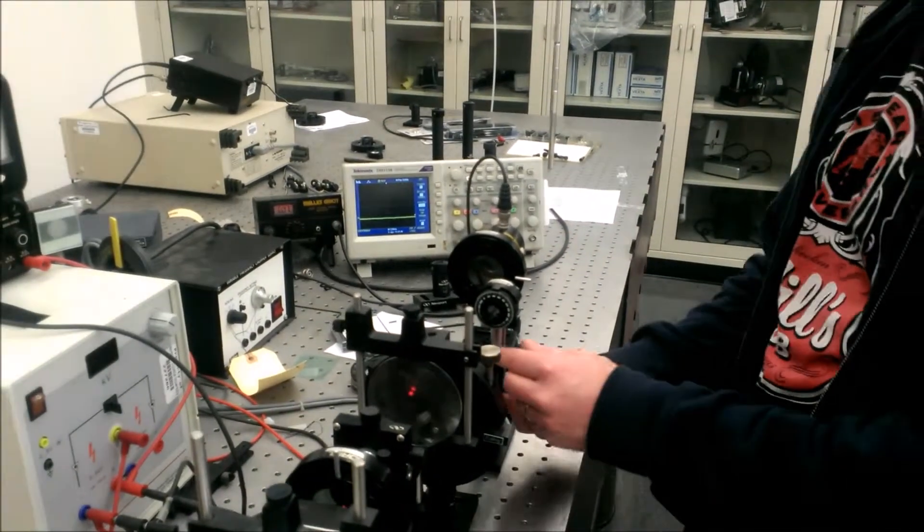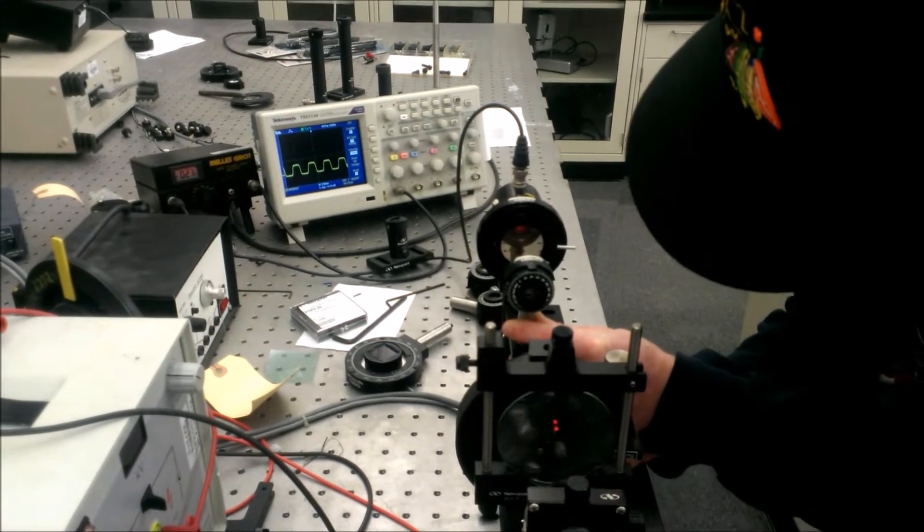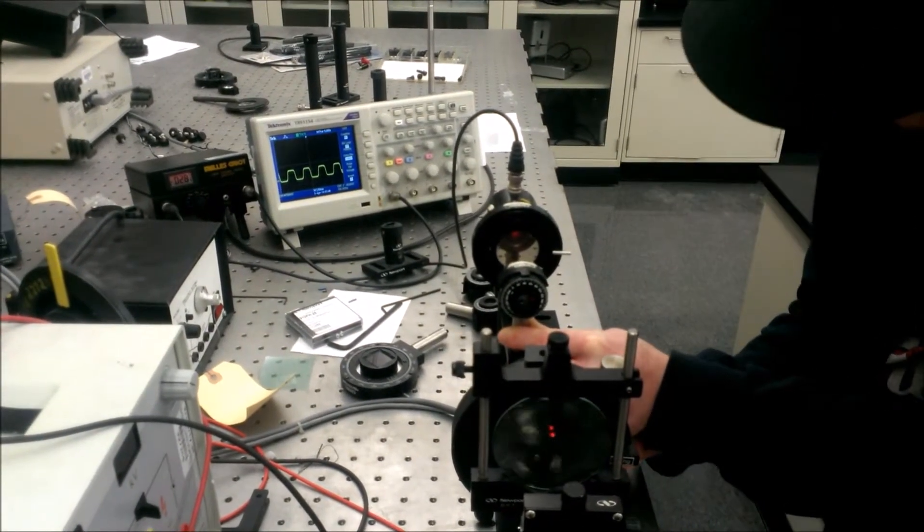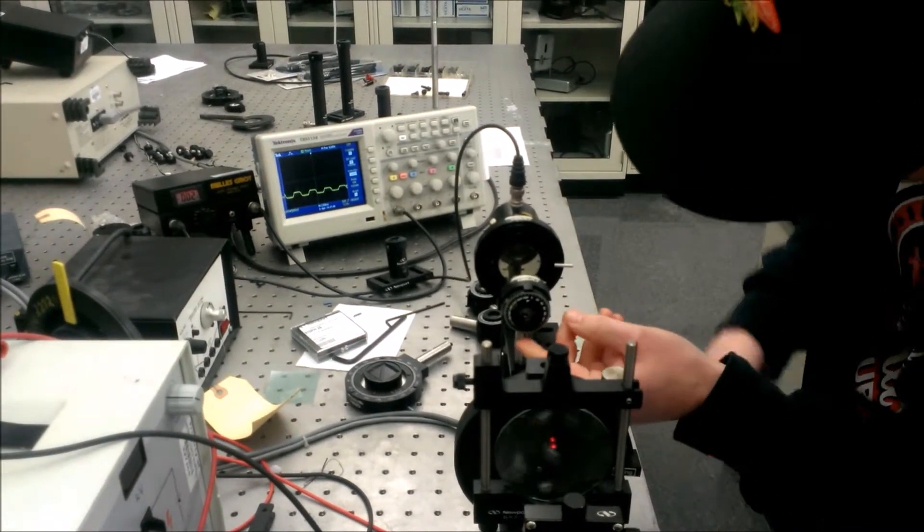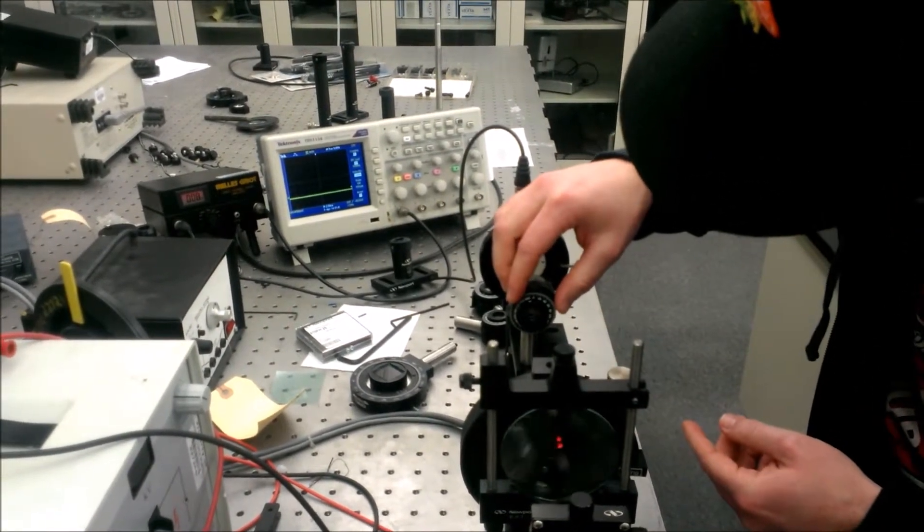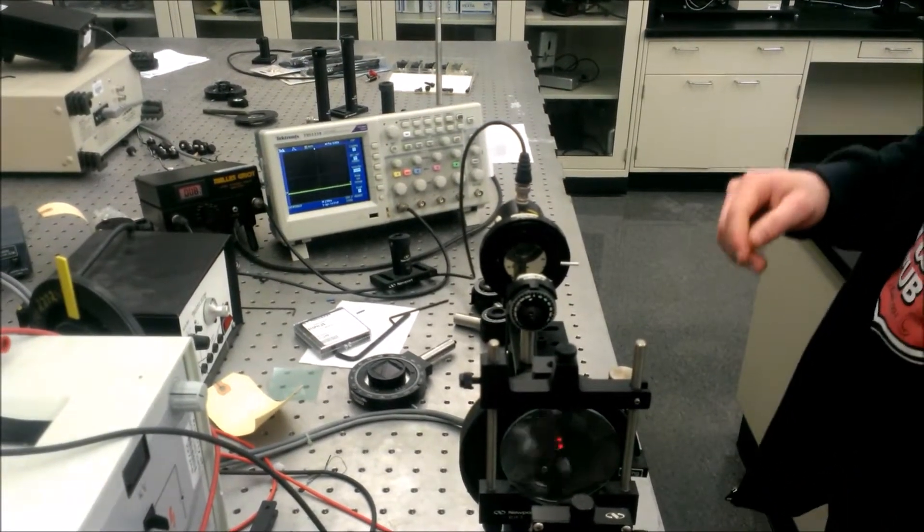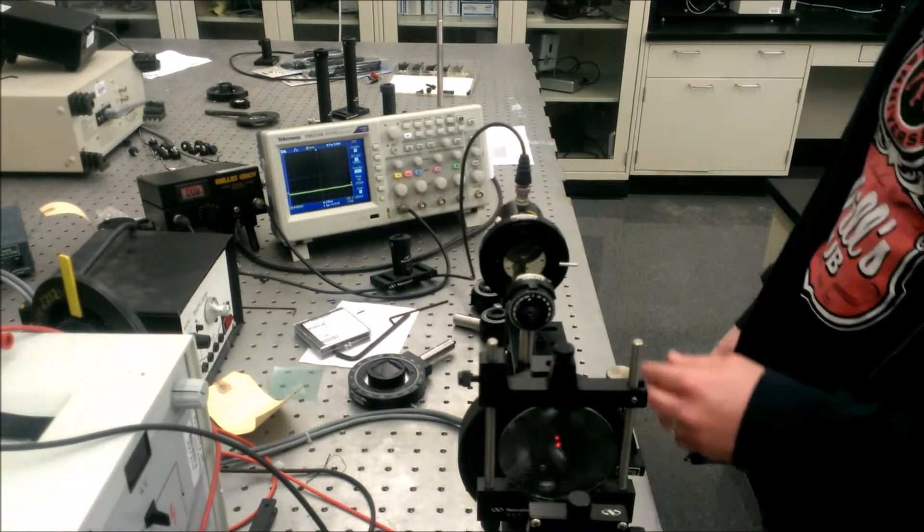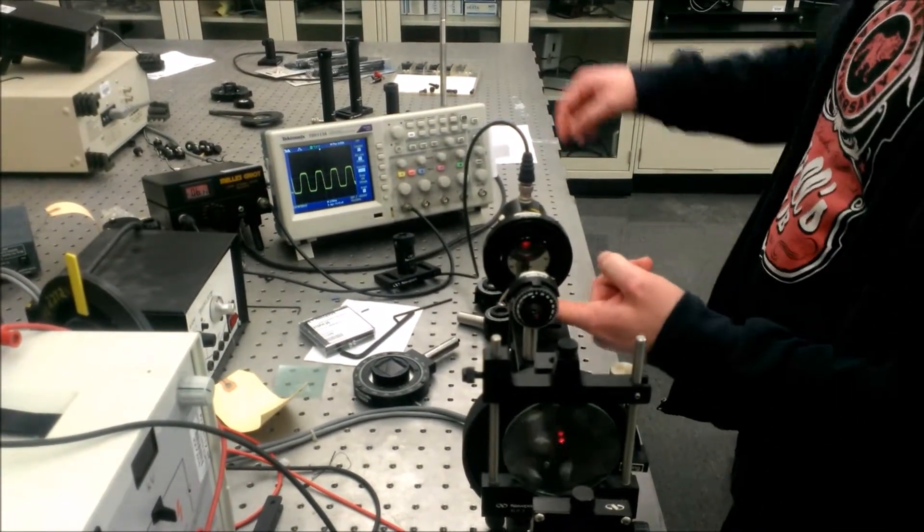Next, you want to put the quarter plate in view of the beam and put it at zero. And then in 30 degree increments, going around 360 degrees on the analyzer, you want to record the amplitude.